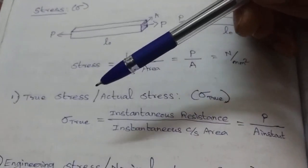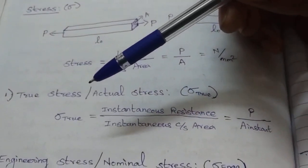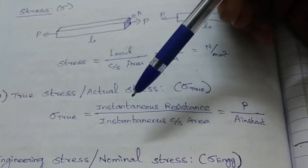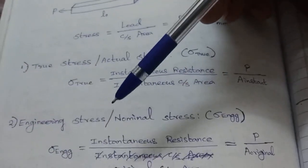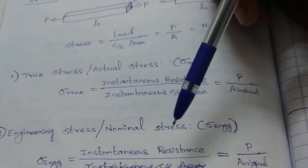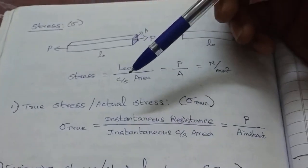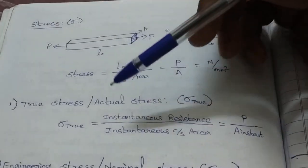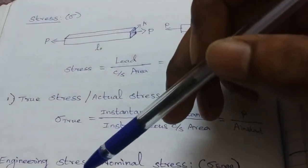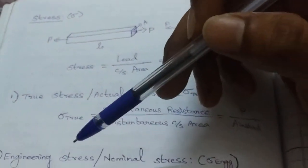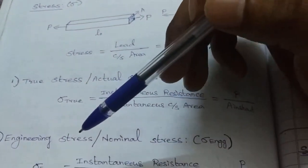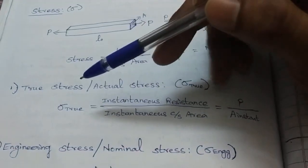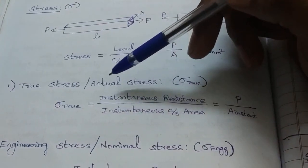Now, this stress is of two types. One is true stress or actual stress, and two is engineering stress or nominal stress. Our course at college level deals with engineering stress. There are two types of stress: true stress and engineering stress.